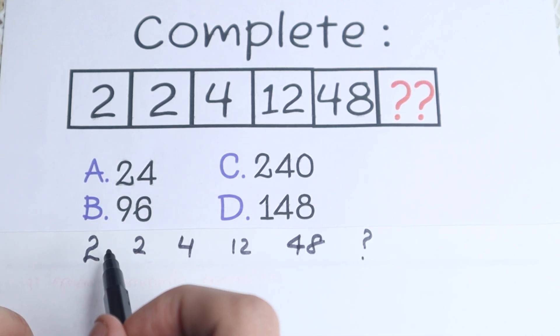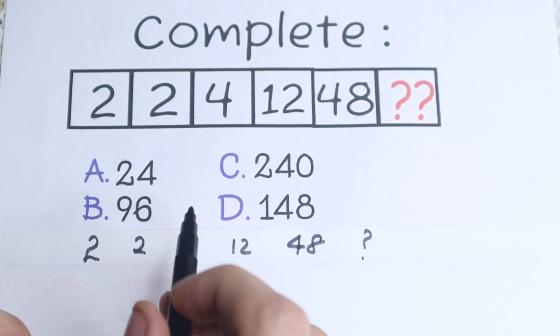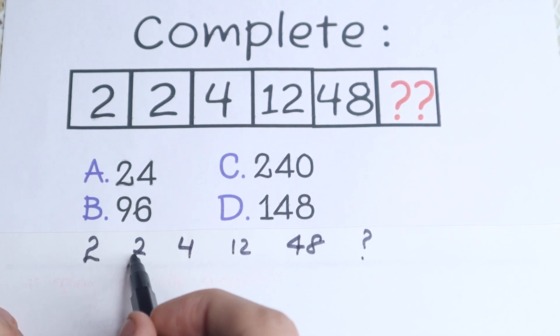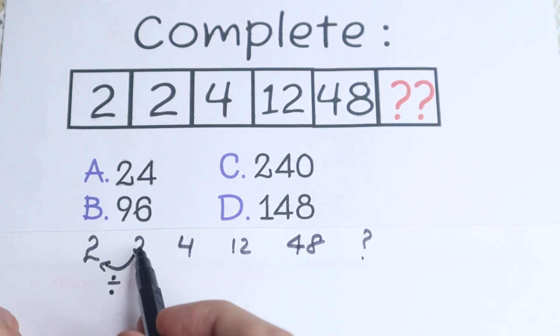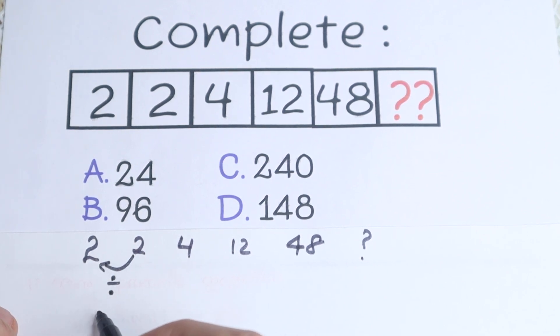First of all, I see right now that these are the same numbers, so 2 and 2 are the same numbers. But moreover, if we divide these numbers, so 2 divided by 2. If we divide this second number by the first one, we will have 1 as a result. So 2 divided by 2 equal to 1.